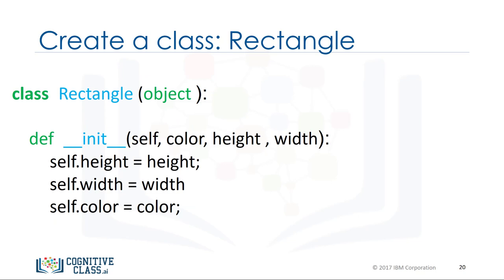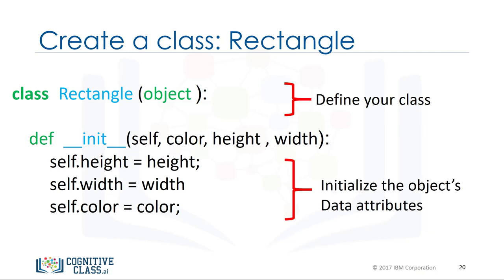Similarly we can define the class rectangle in Python. The name of the class is different, and this time the class data attributes are color, height, and width.